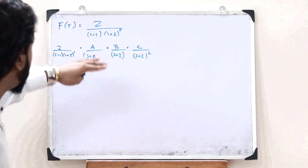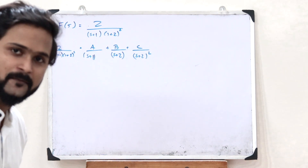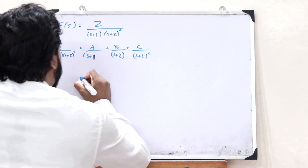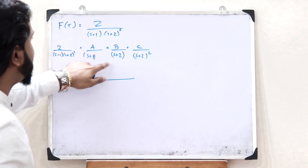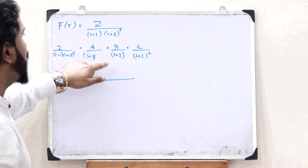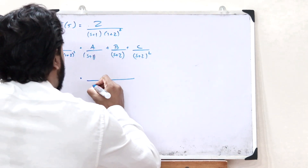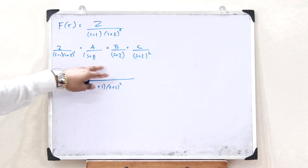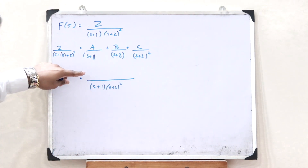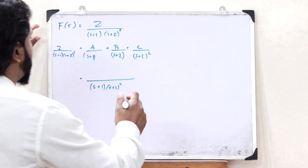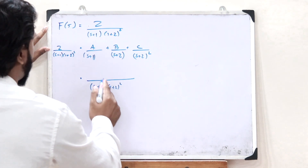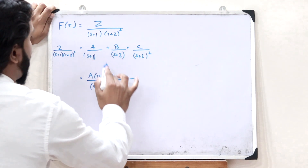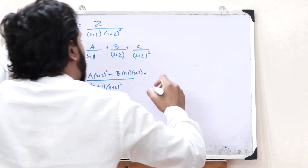Applying standard mathematics, we find the LCM of these three terms, which is (s+1)(s+2)². Taking the numerator, since A doesn't have (s+2)², we get: A(s+2)² + B(s+1)(s+2) + C(s+1) equals the numerator 2.